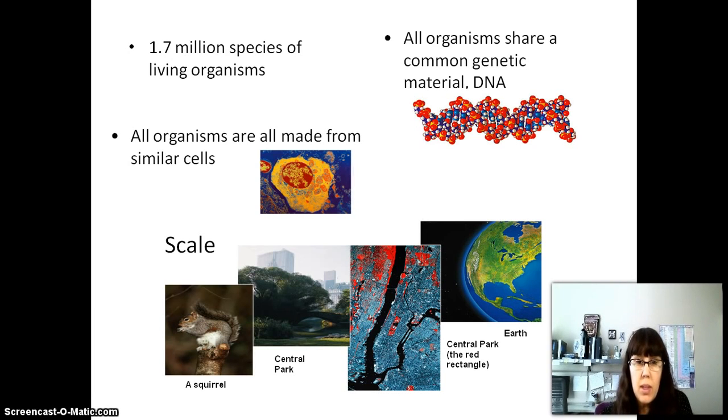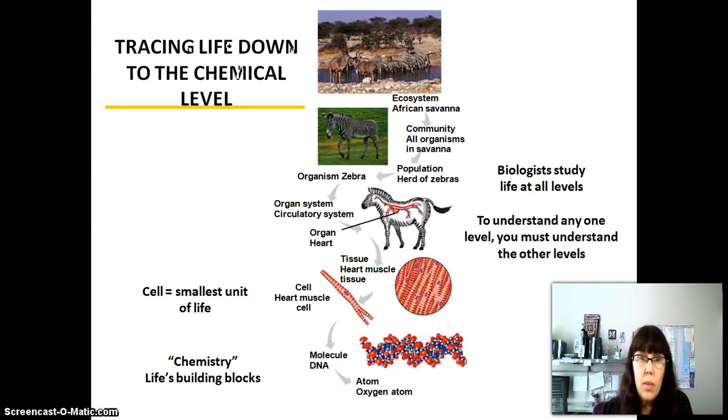At the scale we're talking about right now, we're talking about the molecular scale within a cell. To trace life down to the chemical level, you've got to understand what's going on at various different levels. If you want to know what's going on with a zebra, you may need to understand a little bit about its organ system, to know why its heart's functioning well or not well.